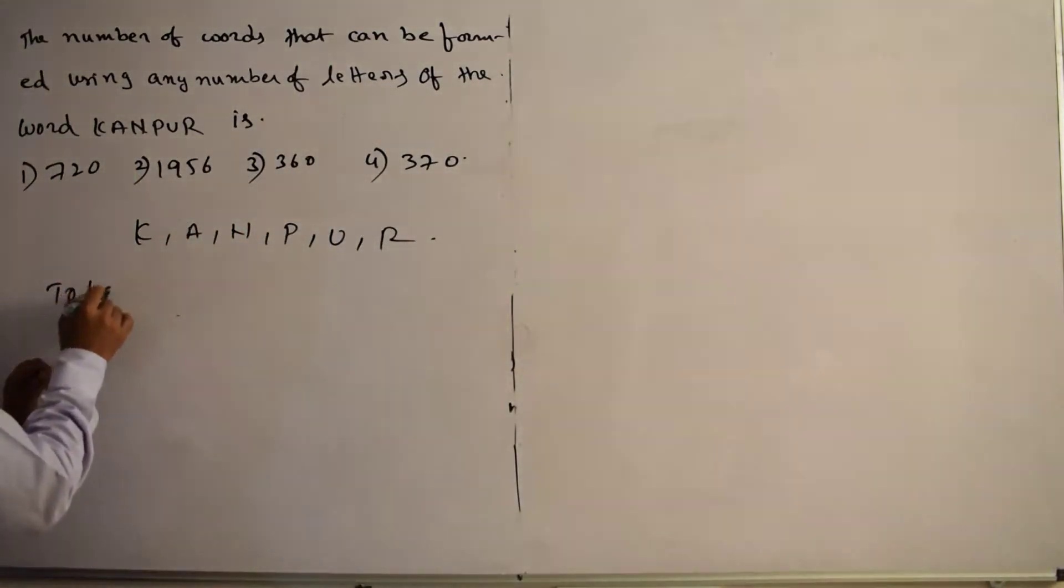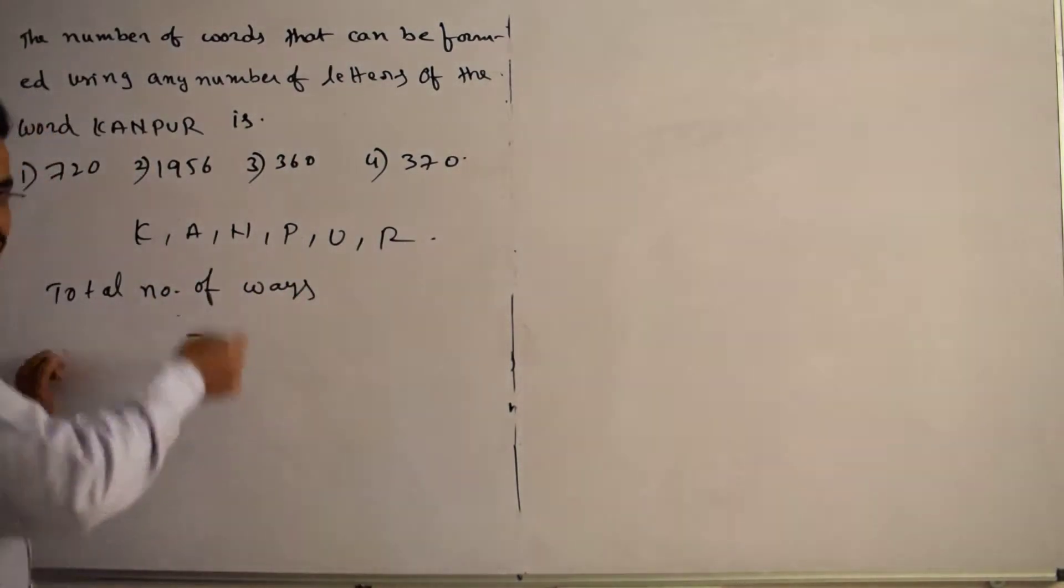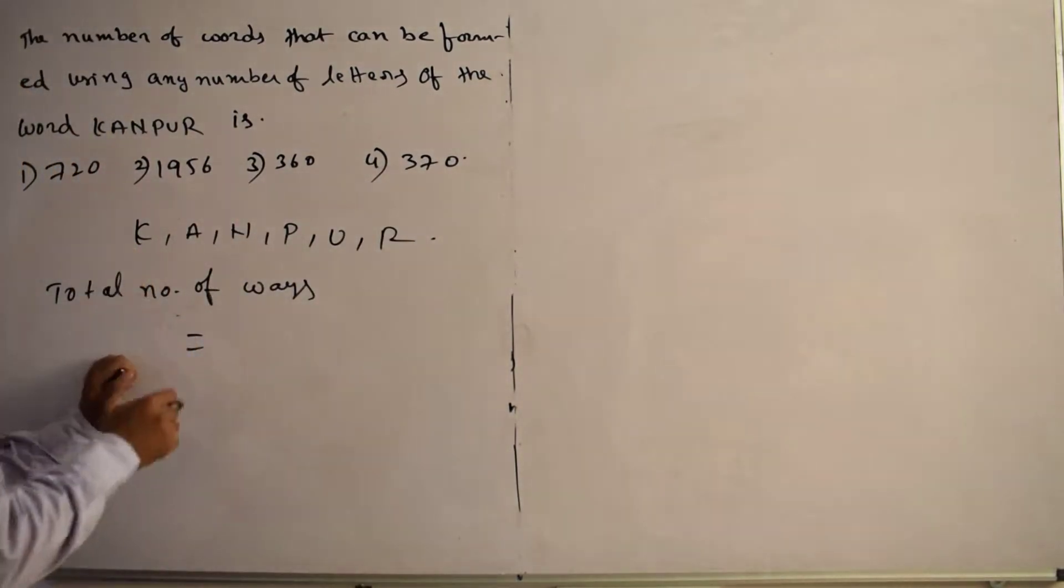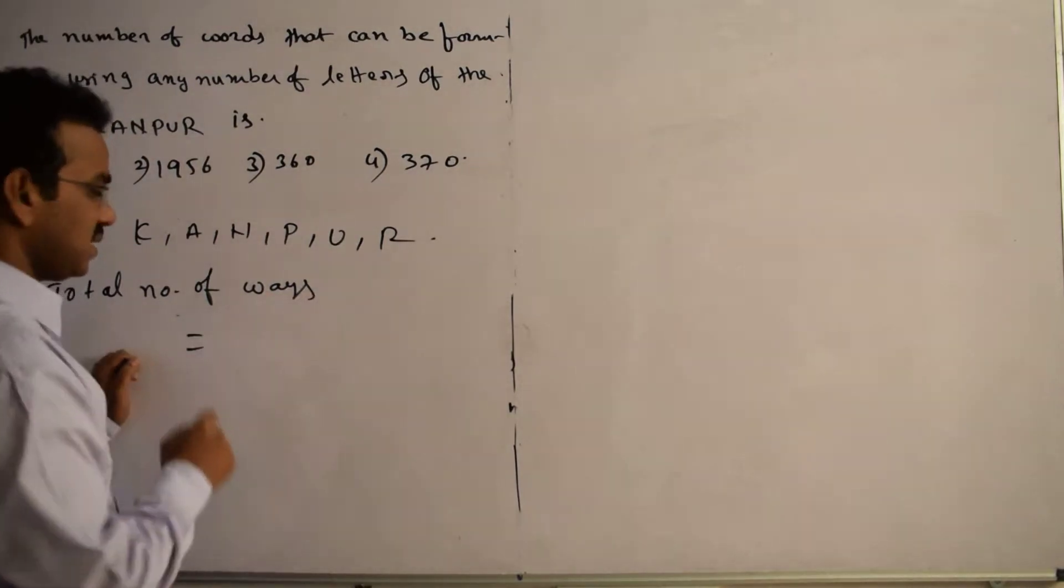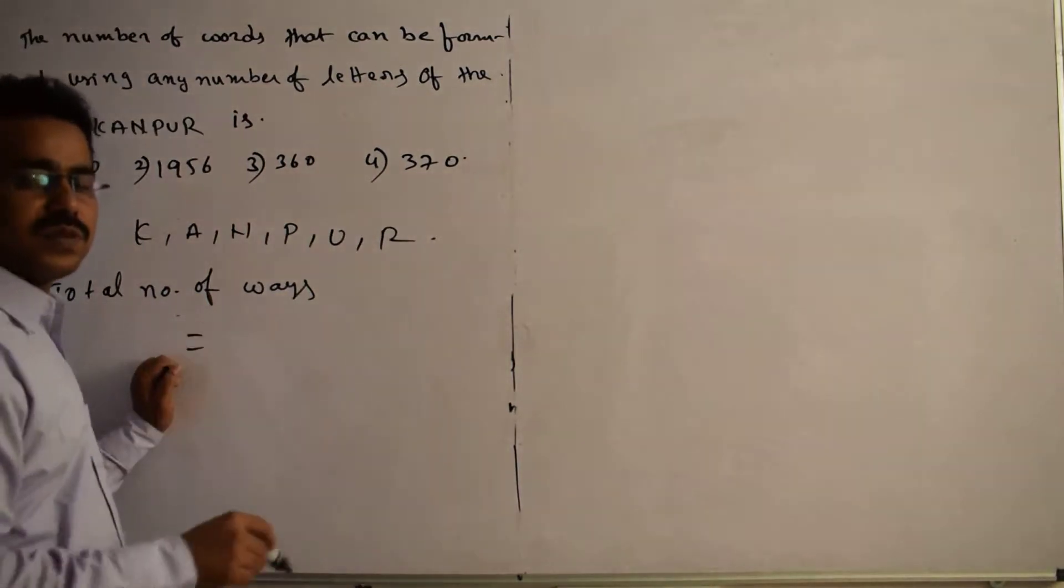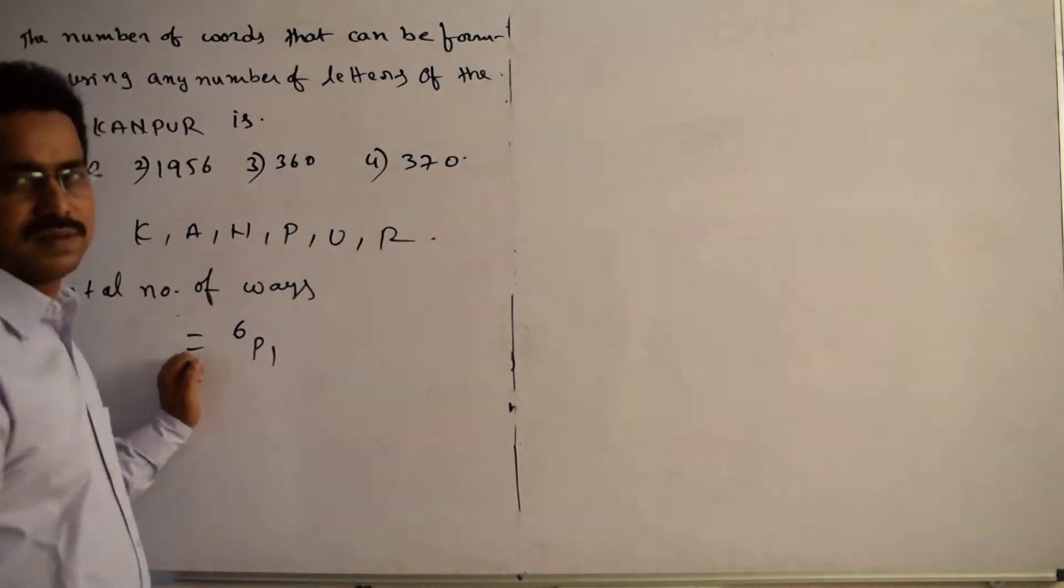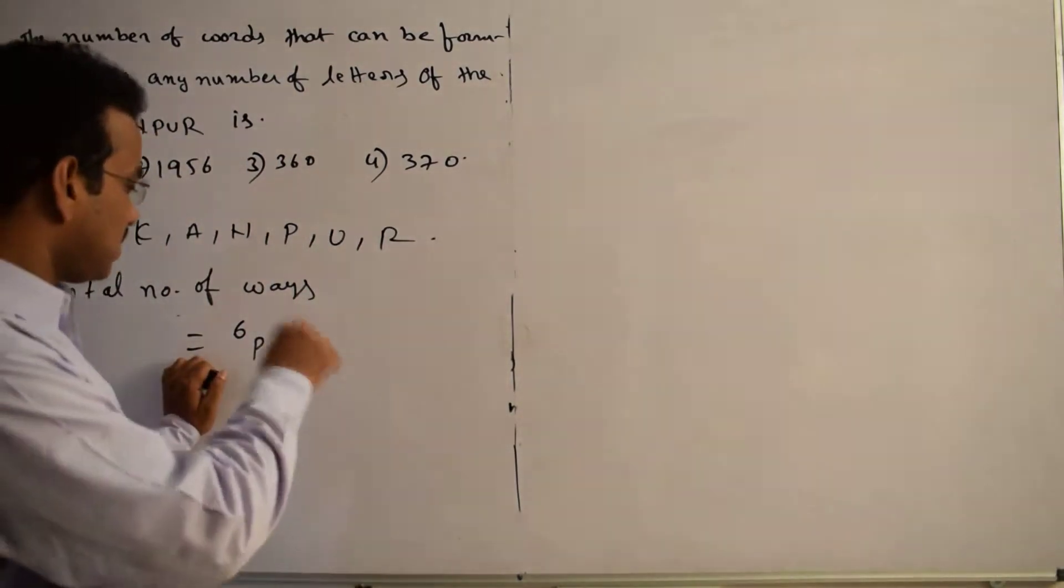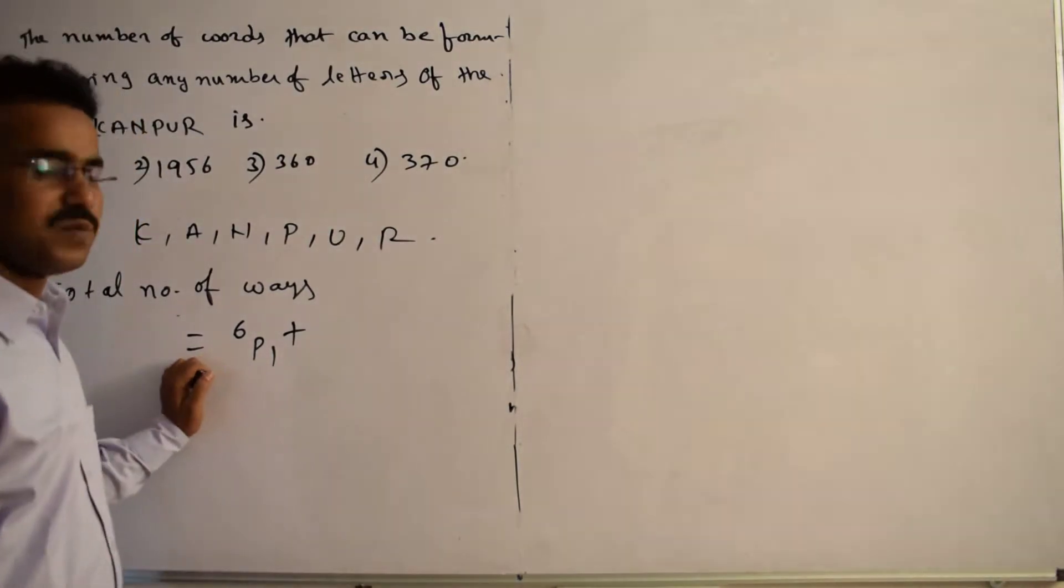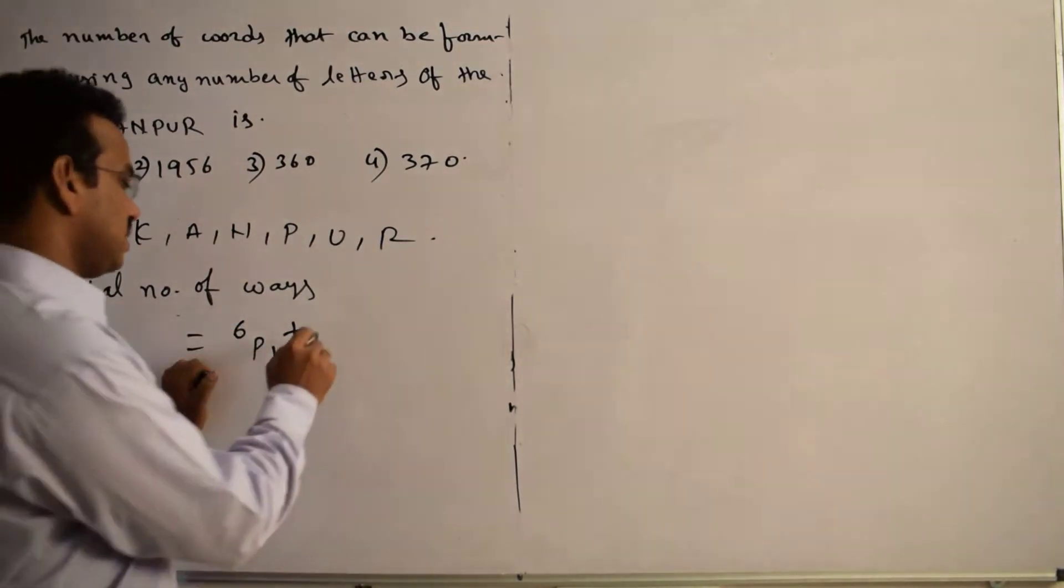See, here clearly, let me write. The total number of required ways, total number of ways equals to, the required number of ways equals to the total number of words forming with one letter. How many letters are there? Six letters, 6P1 ways. Plus, now I am going to focus on two letter words. How many ways total number of words can be formed with the two letters means 6P2.